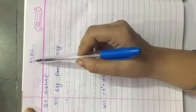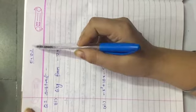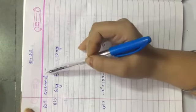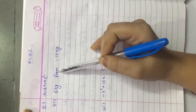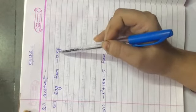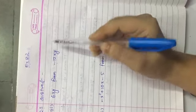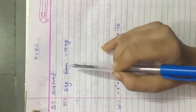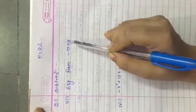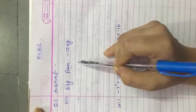Hello everyone, this is exercise 12.2 question number 3. Subtract 6xy from minus 12xy. We know that when these types of questions come, first we have to write the second expression, then put a minus sign, then write the first expression.